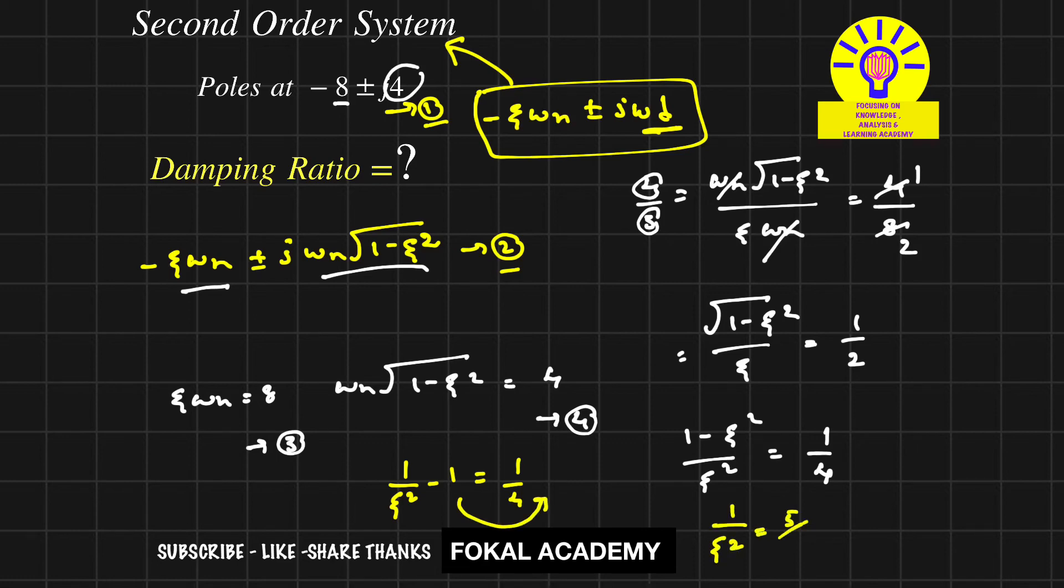From this we get ζ = 0.89, and this is the damping ratio for the given second order system with poles at -8 ± j4. This is the process for finding the damping ratio. Thanks for watching, please subscribe, like, and share.